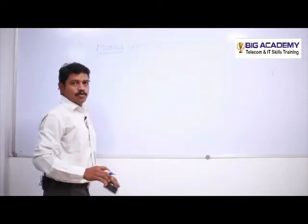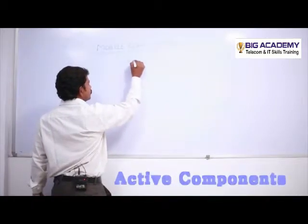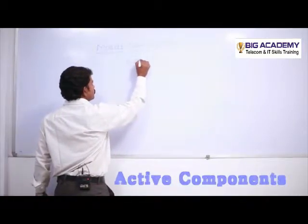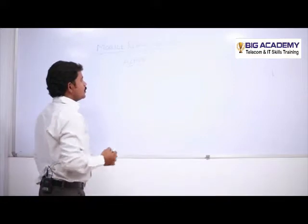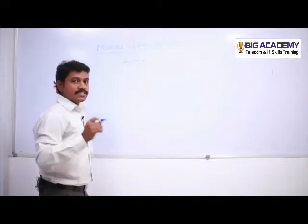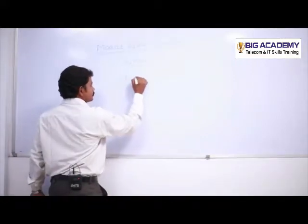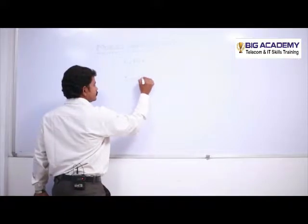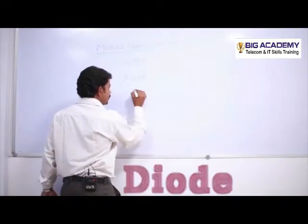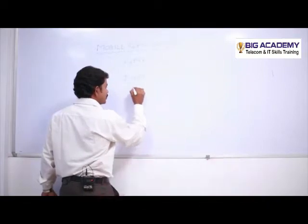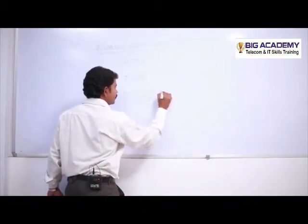Next we'll look at active components. In active components, we'll start with the diode. The diode has a symbol like a triangle with a small line in front of it, and it is identified on a circuit board with the letter 'D'.